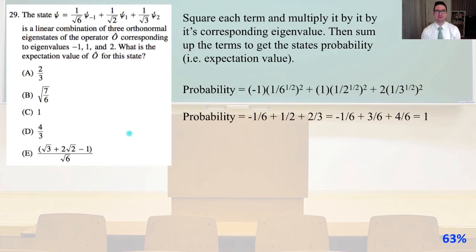Number 29. The state psi equals 1 over the square root of 6 psi minus 1, plus 1 over the square root of 2 psi 1, plus 1 over the square root of 3 psi 2, is a linear combination of three orthonormal eigenstates of the operator O hat corresponding to eigenvalues minus 1, 1, and 2. What is the expectation value of O hat for this state? Well, we're going to square each term and multiply it by its corresponding eigenvalue. Then sum up the terms to get the state's probability, i.e. the expectation value. So our probability is going to equal minus 1 times 1 over the square root of 6, that quantity squared, plus 1 times 1 over the square root of 2, that quantity squared, plus 2 times the quantity 1 over the square root of 3, that quantity squared. So our probability is going to equal minus 1 over 6 plus 1 half plus 2 thirds. That is going to equal minus 1 sixth plus 3 sixth plus 4 sixth. That's going to equal 1. That is answer C.